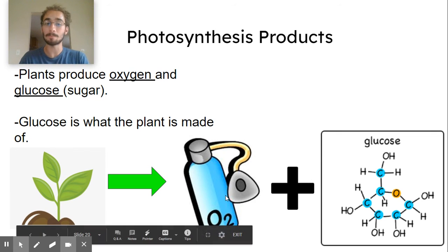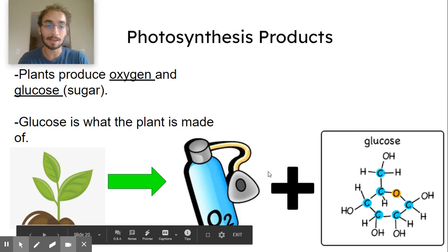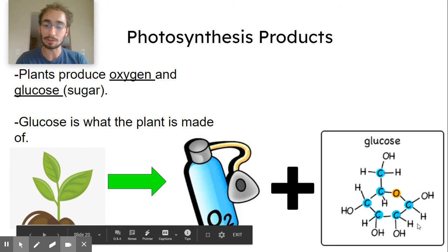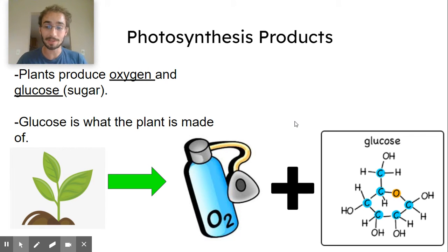They make oxygen, which is the oxygen gas that we breathe. And they make glucose, which is a sugar. And not like table sugar, that's sucrose. But glucose is what the plant is made of. So that's what I want you to think glucose is. They're basically building themselves using carbon dioxide and water.